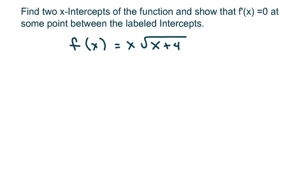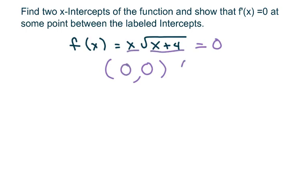Hi everyone. We're going to find two x-intercepts of a function and show that the derivative of f equals zero at some point between the labeled intercepts. The first thing I'm going to do is set y to zero, so when y is zero, f of x is zero. For this piece it's going to be zero, and for this piece that would be negative four. So there are my two x-intercepts.